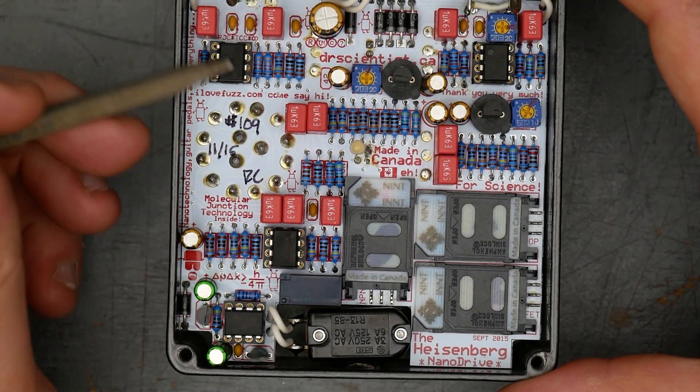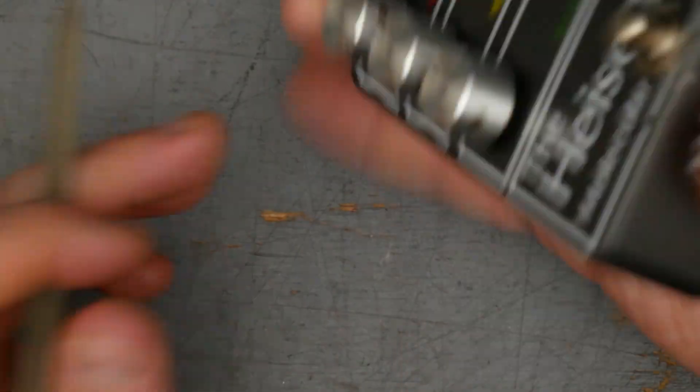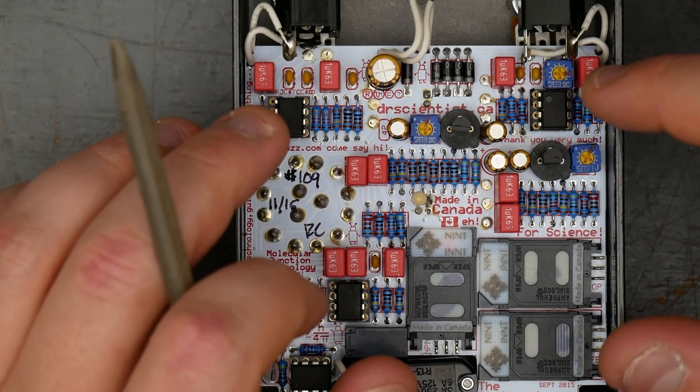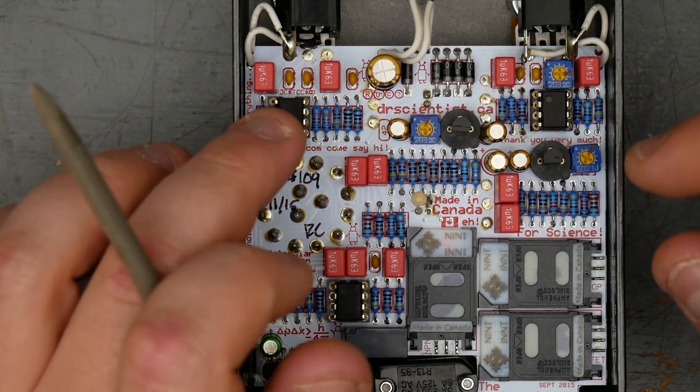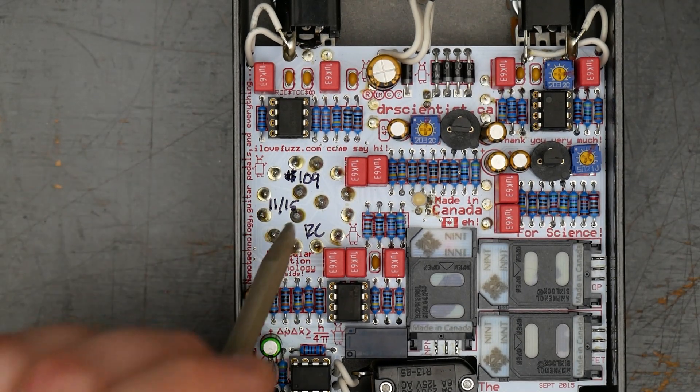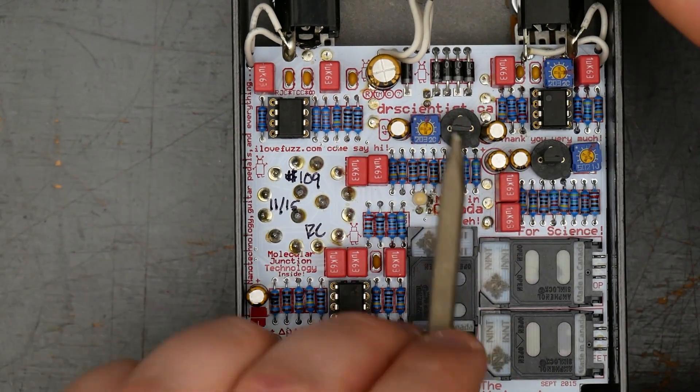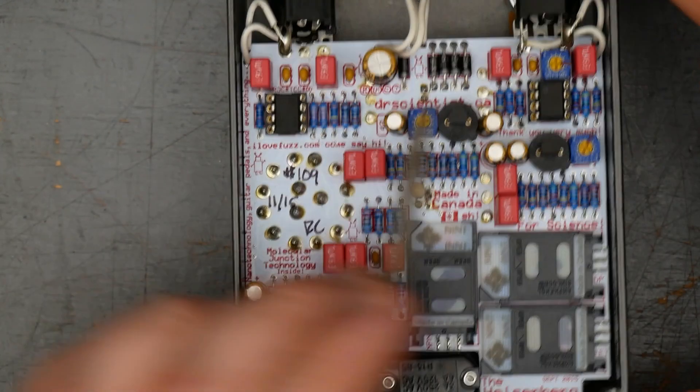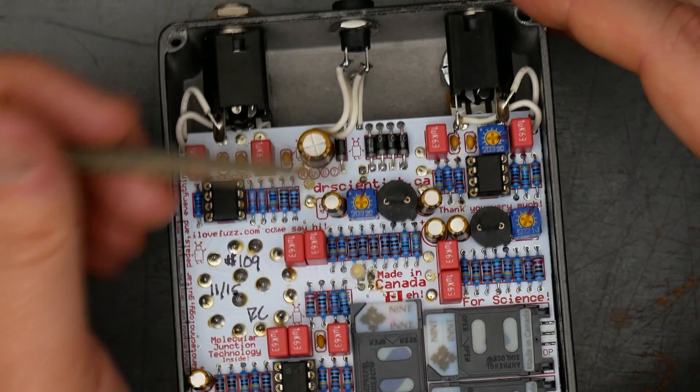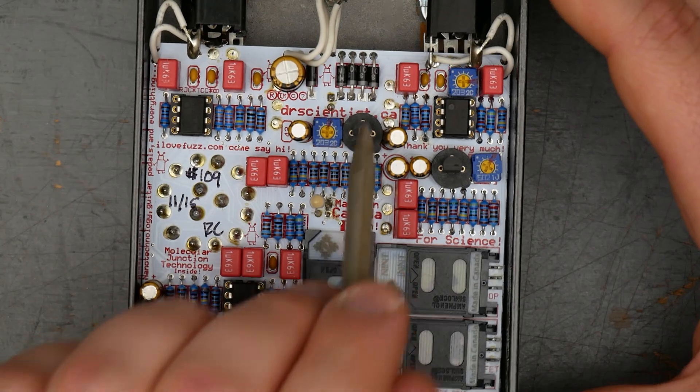The ICs here. These two are NE5532 dual op amps. One is presumably for the op amp gain stage. The other one is probably buffering. Oh no, my mistake. All three of these are NE5532s. One is obviously for the op amp. One is probably buffering the other one. I'm not sure what the third one's doing here. We have two TO-92 transistors here. One of them is the BS170 MOSFET for the MOSFET gain stage. And the other one is a 2N5088 BJT NPN transistor.